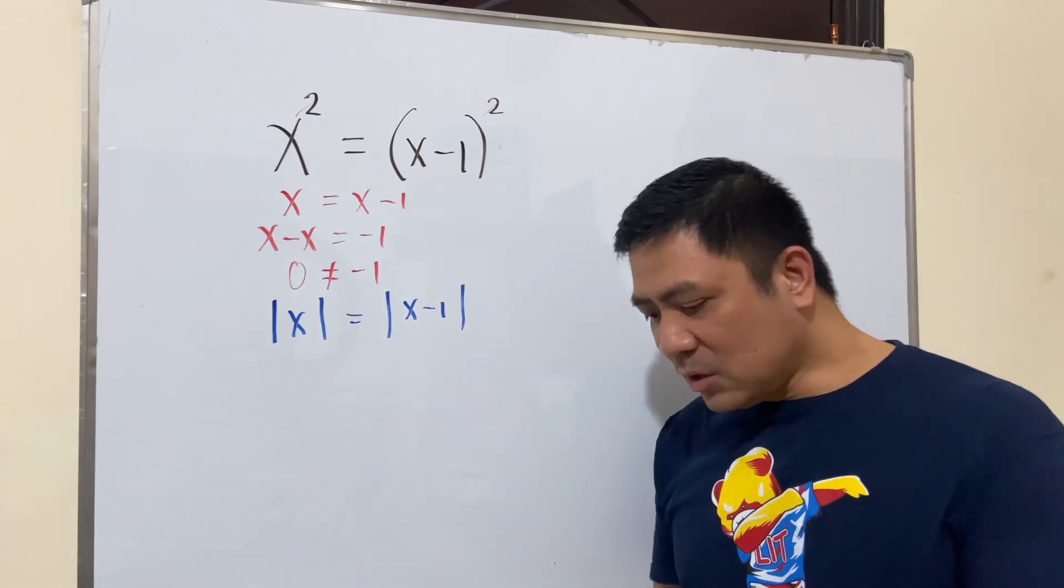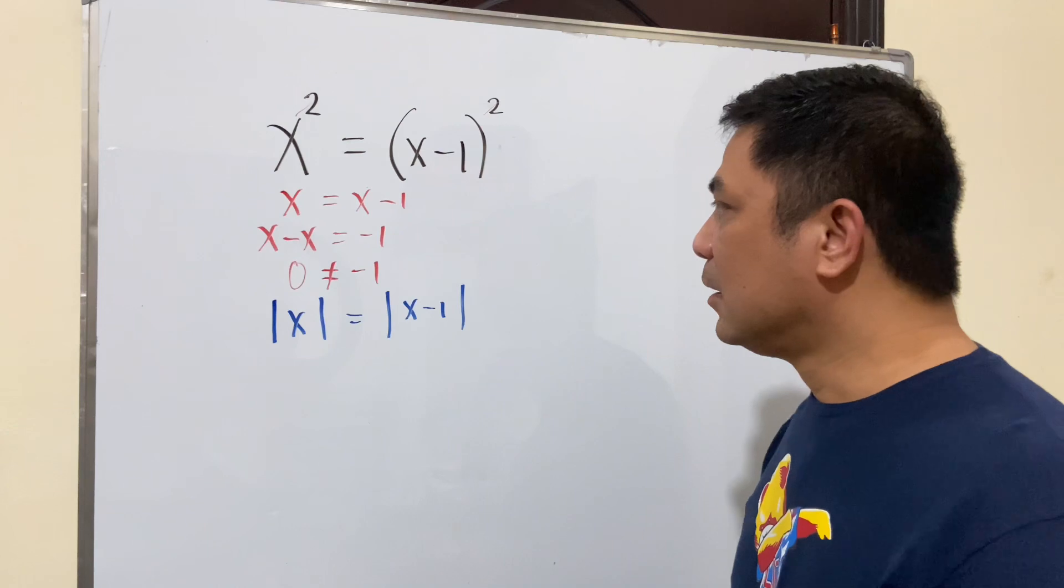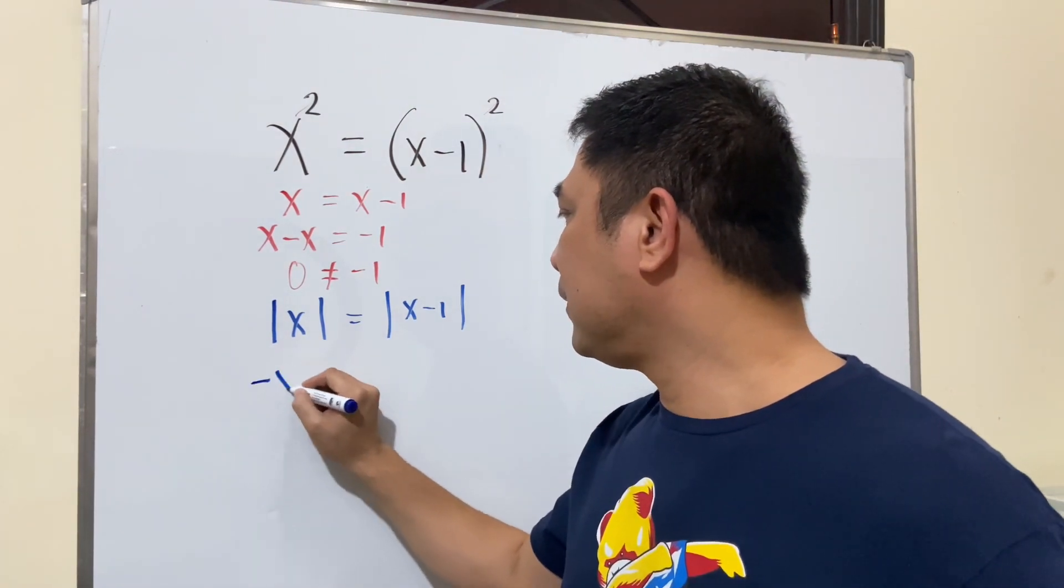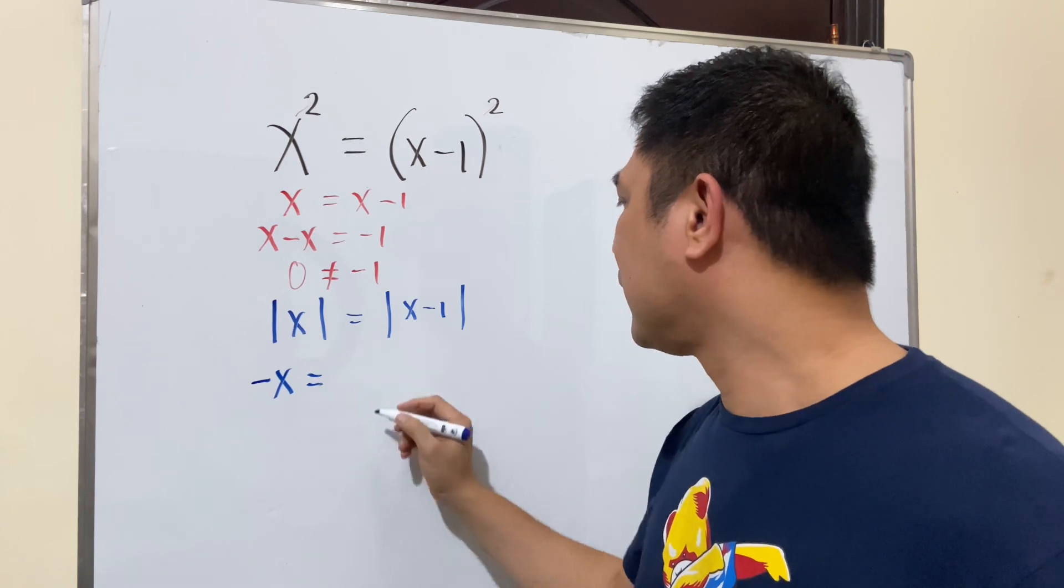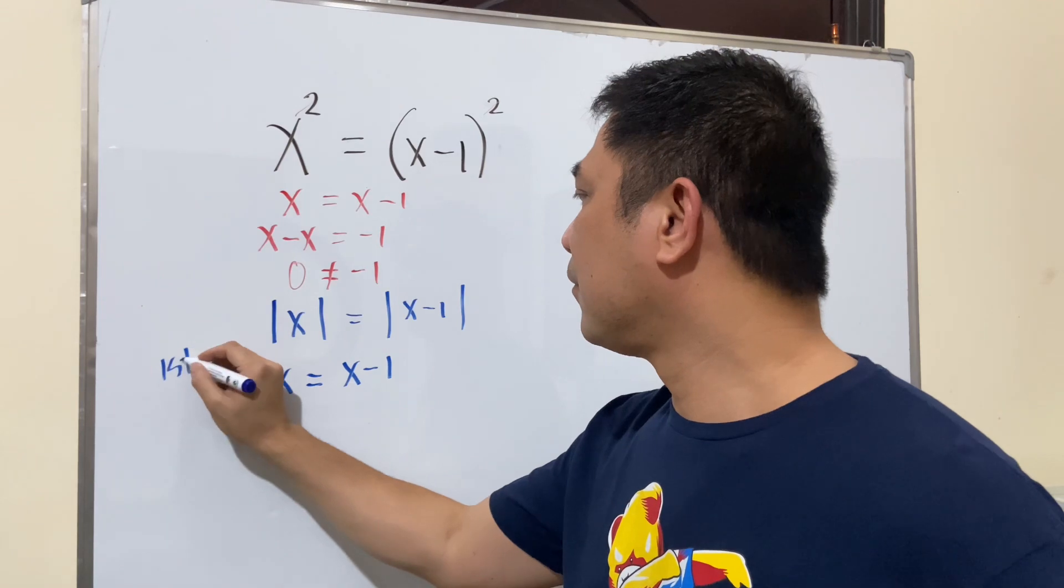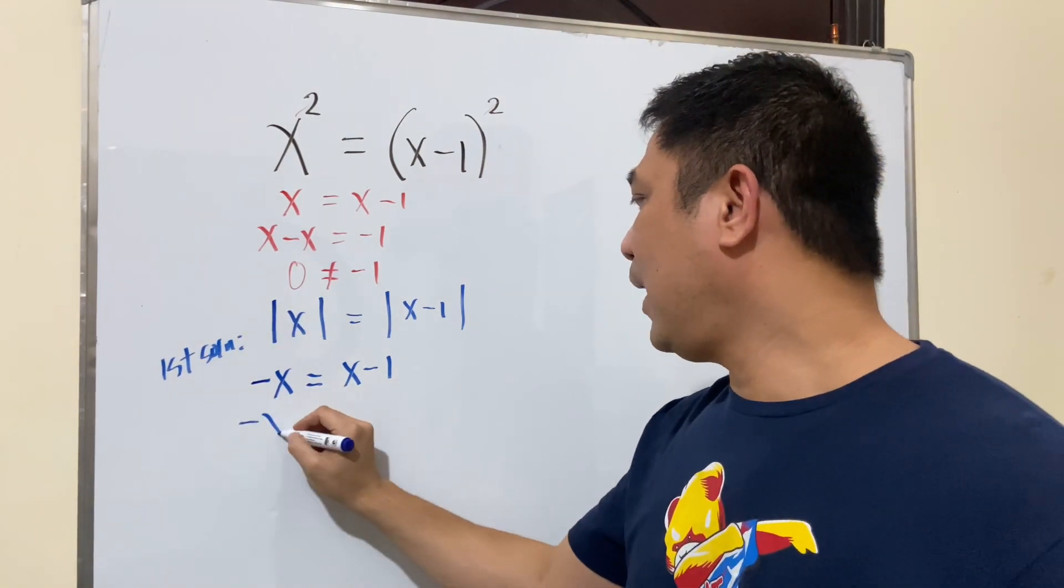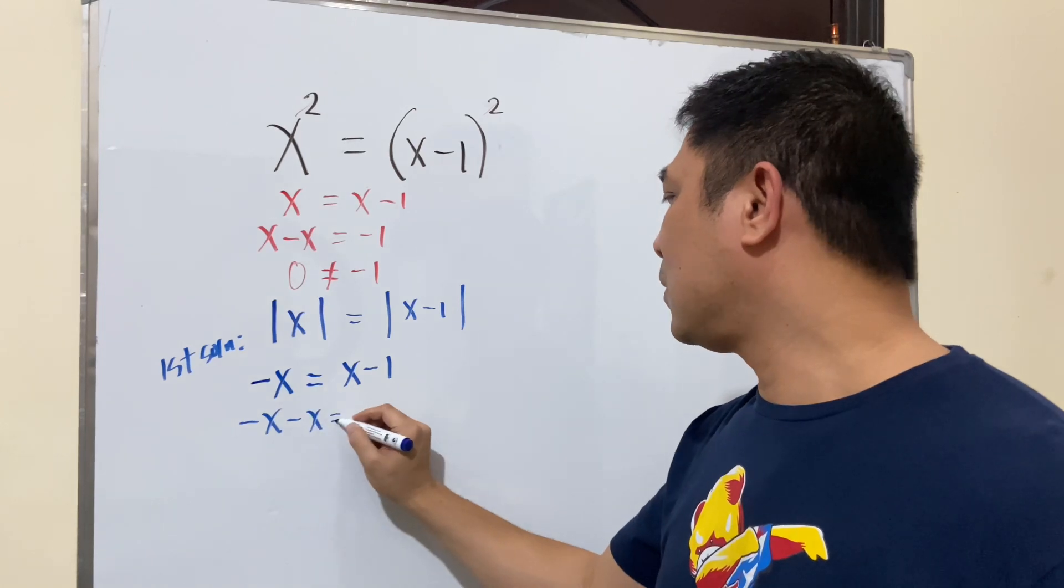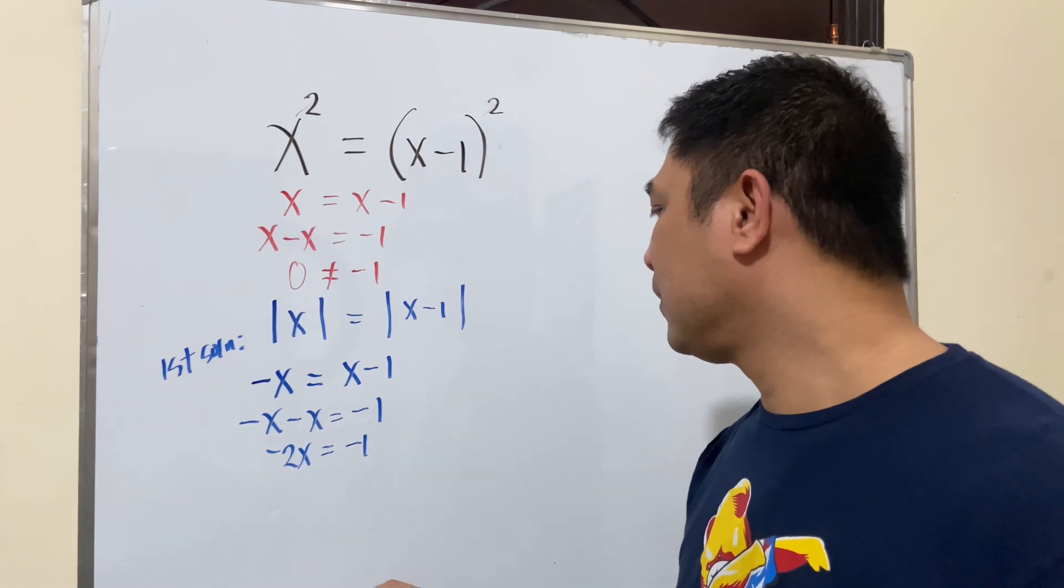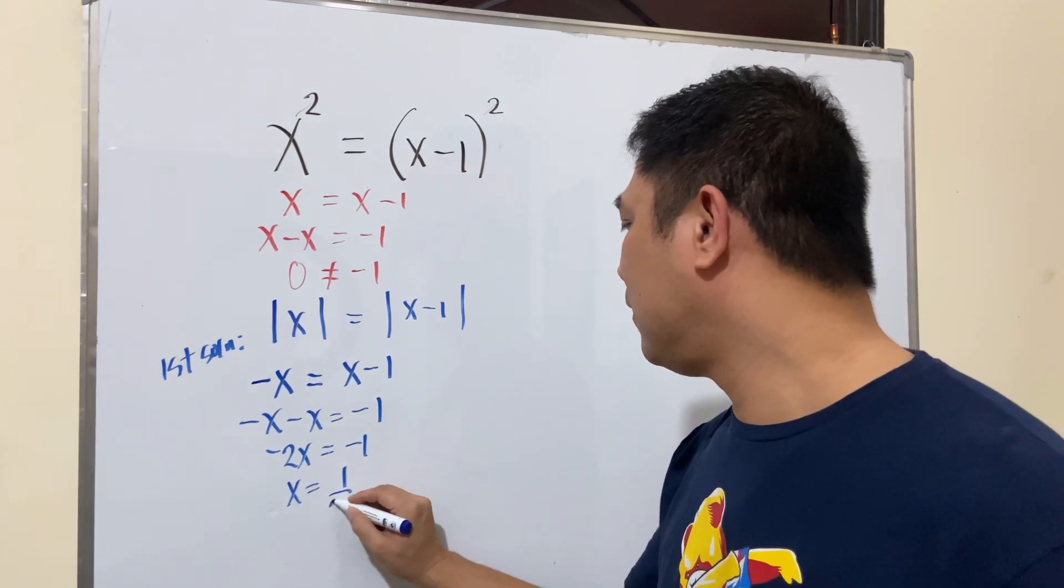So by doing so, let's try to solve if we get some values that will satisfy the equation. So let's see this one. Let's make this one negative, the left side of the equation. Then we keep the right side the same. So first solution here. So negative x minus x is equal to negative 1. So negative 2x is equal to negative 1. So we have here x, which has a value of 1 half.